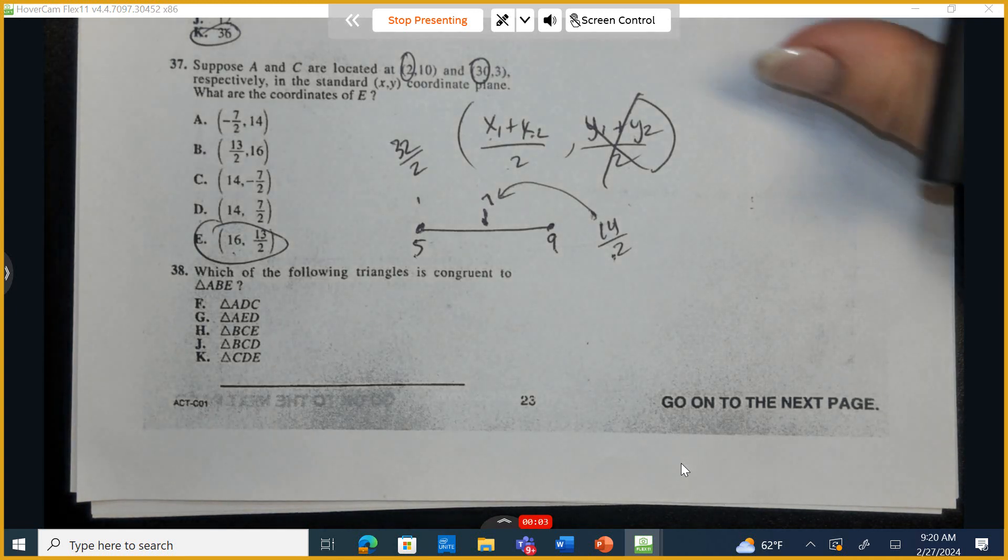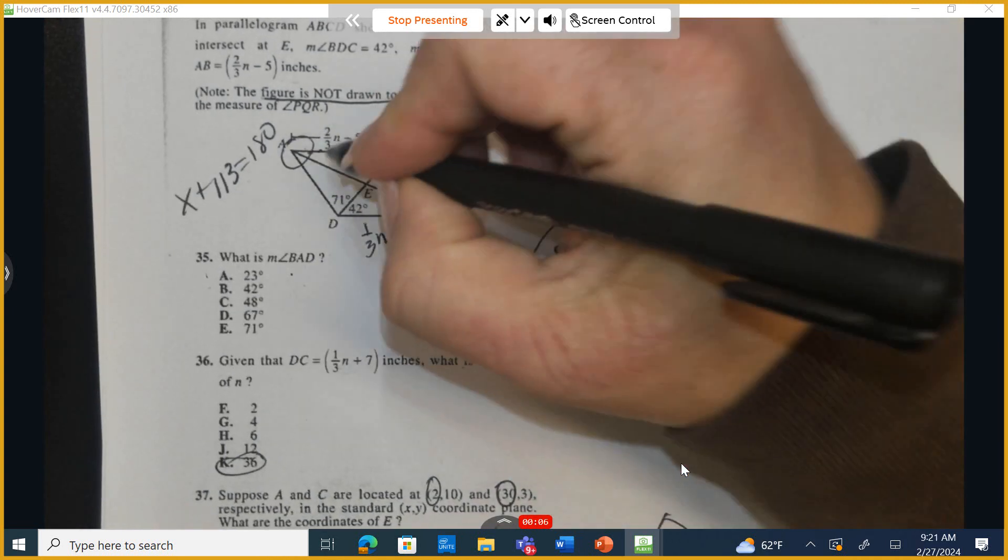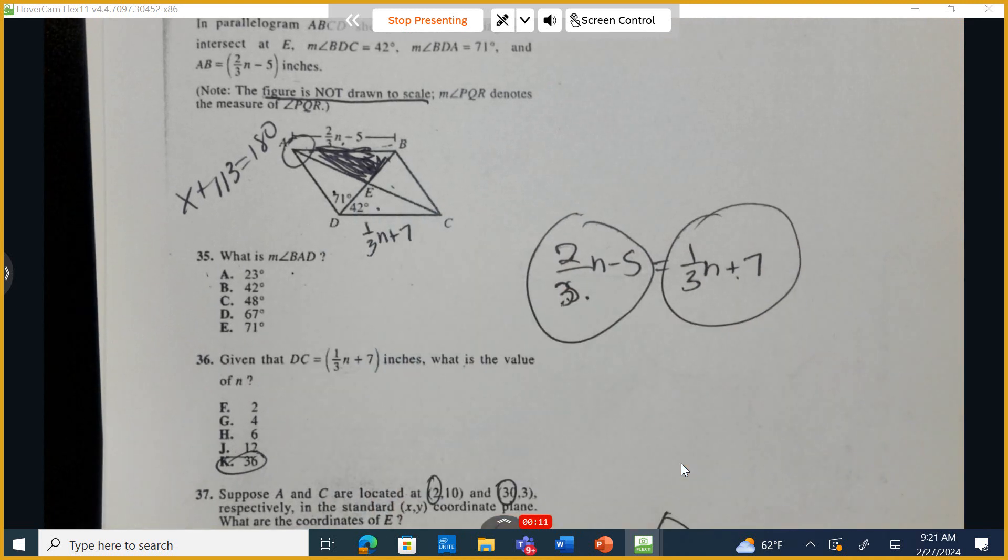Which of the following triangles is congruent to AVE? So I'm going to come up here, I'm going to locate AVE, and I'm going to color it in. I want to know what other triangle here of the three remaining is equivalent to that.